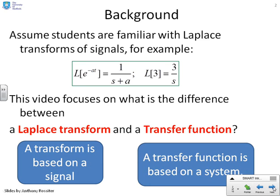Here's a summary. A transform is based on a signal — if you give me a time domain signal, like an exponential, I can take the Laplace of that and get a Laplace transform. A transfer function, however, is based on a system. It's really important that students get this clear: a Laplace transform is for a signal; a transfer function represents a system.